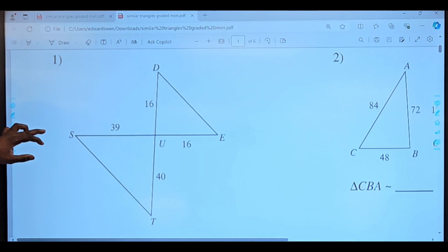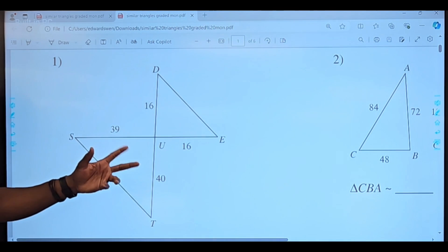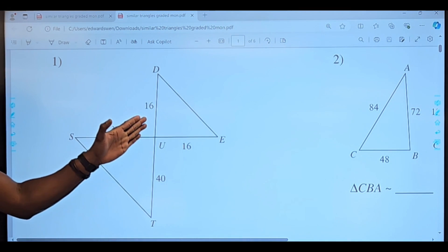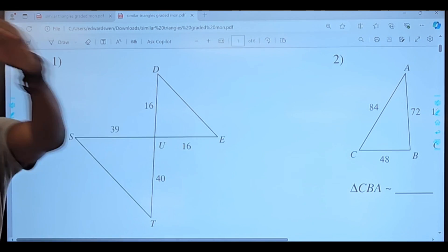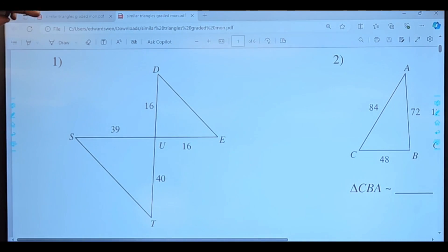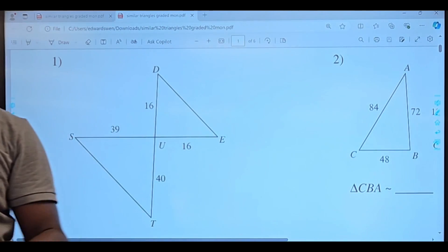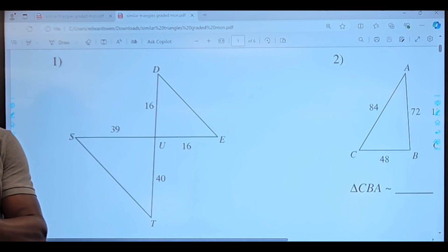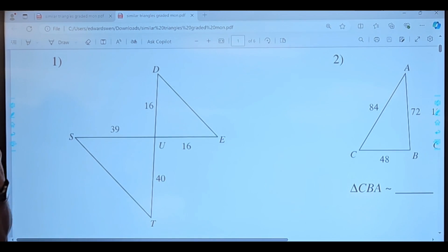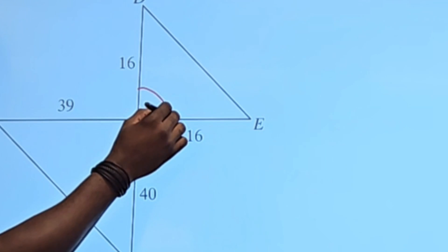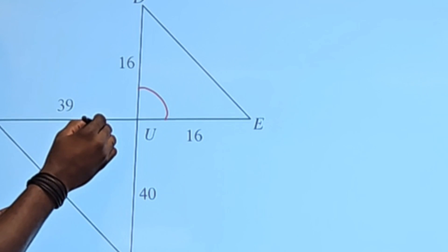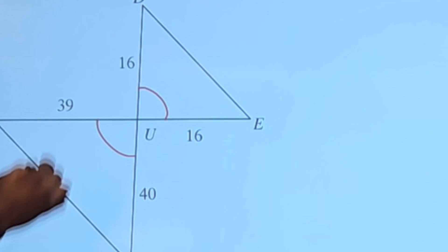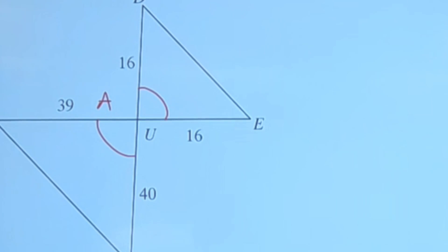Let's take a look at number one. We see we have two triangles attached by straight lines that cross. Whenever lines cross like this, what type of angles are formed? Vertical angles — and vertical angles are congruent. So we have vertical angles, which means this angle here is congruent to this one because the two lines cross. So we have congruent angles in the mix.